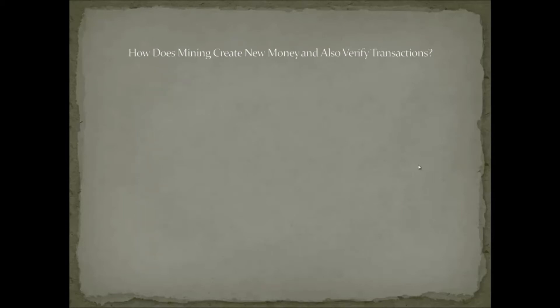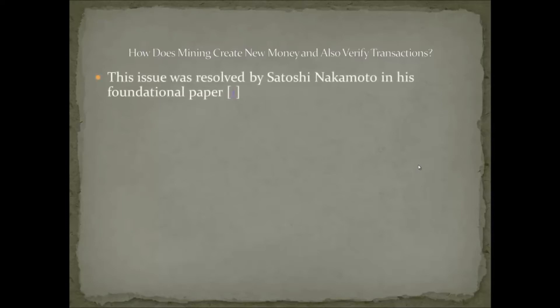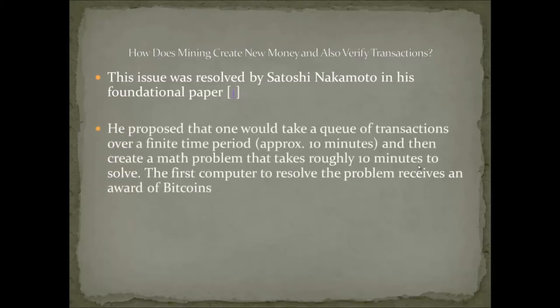So how does mining create new money and also verify transactions? Satoshi Nakamoto — the reason we consider him a very smart person, whoever he or she may be — figured out a solution. He said: let's take a queue, meaning a line of transactions over a finite period of time, first in, first out, treating that period as roughly 10 minutes. Associated with those transactions is a very hard math problem designed to take roughly 10 minutes to solve. The first computer or group of computers to solve it receives an award of Bitcoins.